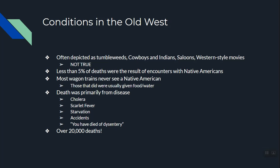As for conditions in the Old West — you've probably seen Westerns with tumbleweeds, cowboys and Indians, shootouts, saloons. That's just not true. On average, less than 5% of deaths in the West were caused by Native Americans. Most wagon trains never even saw a Native American, even though Western movies say they were constantly attacked. Very rarely did that happen, and more often than not, if a wagon train did meet a Native American group, they'd be given food, water, shelter, and help.